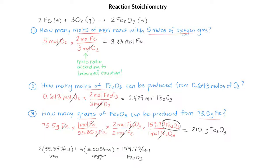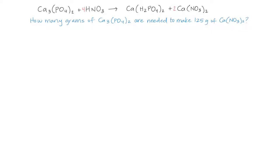That 210 grams of Fe₂O₃ can be produced from 73.5 grams of iron. Now let's do the same type of calculation but with a chemical equation that looks a lot more complex. Here we have 1 mole of calcium phosphate reacting with 4 moles of nitric acid to produce 1 mole of calcium dihydrogen phosphate and 2 moles of calcium nitrate. We want to calculate how many grams of calcium phosphate are needed to make 125 grams of calcium nitrate.